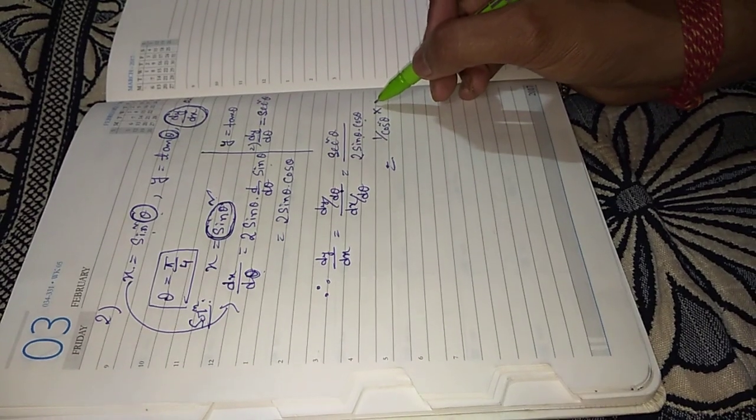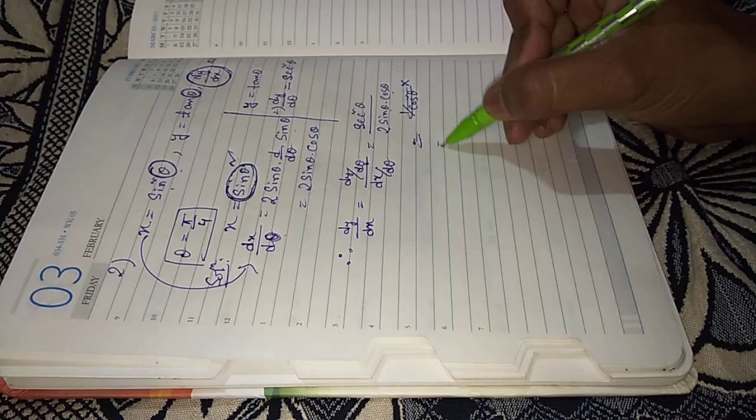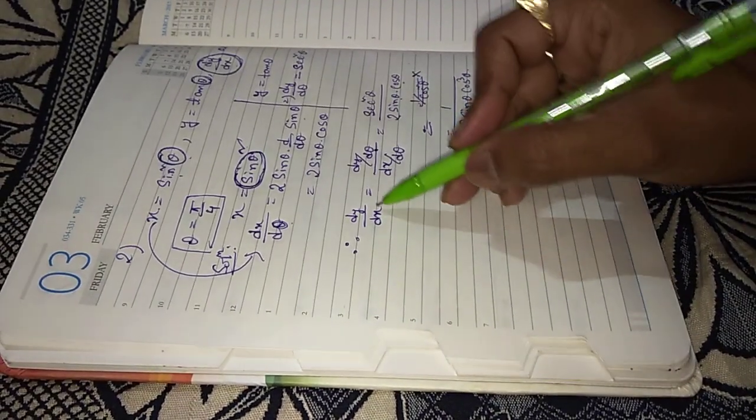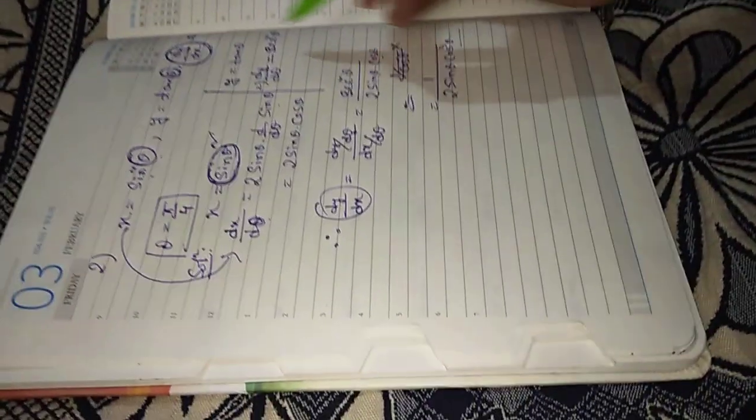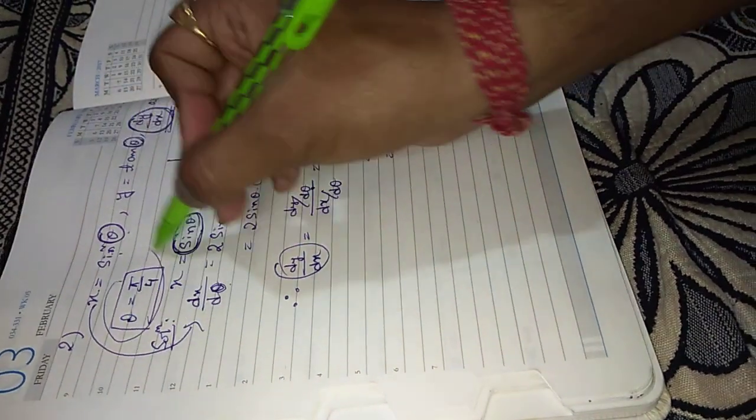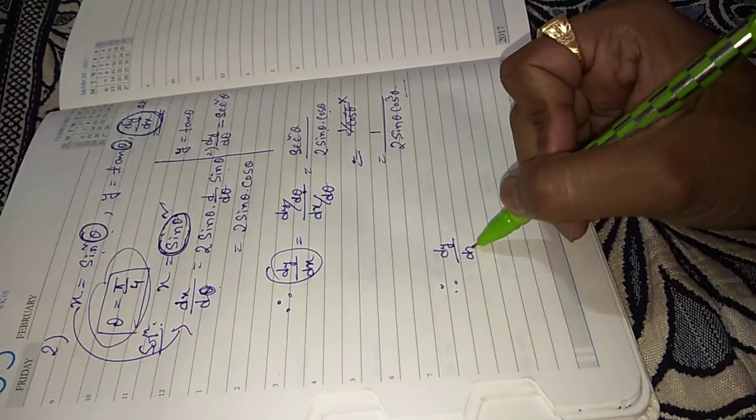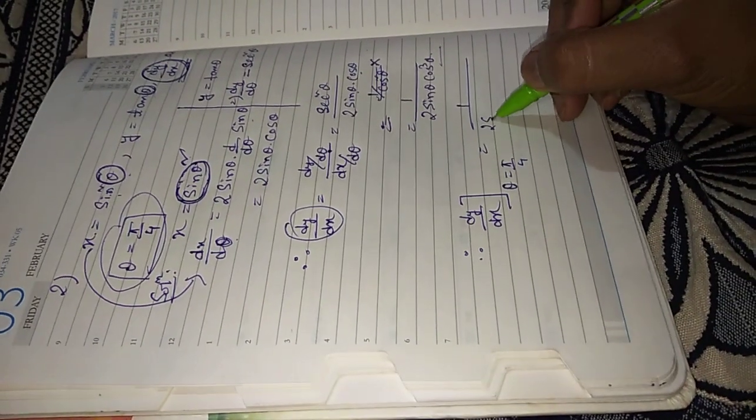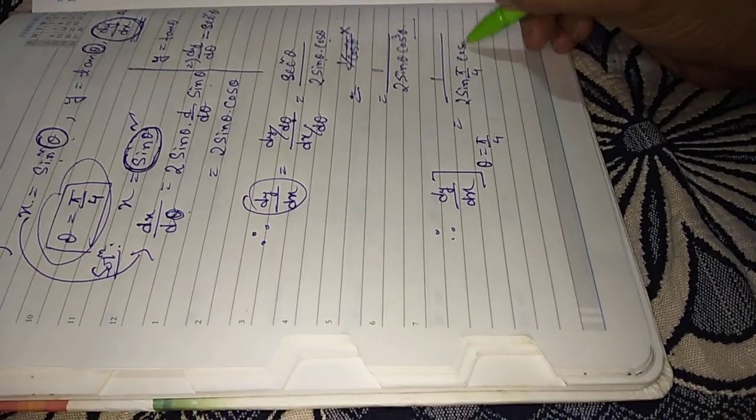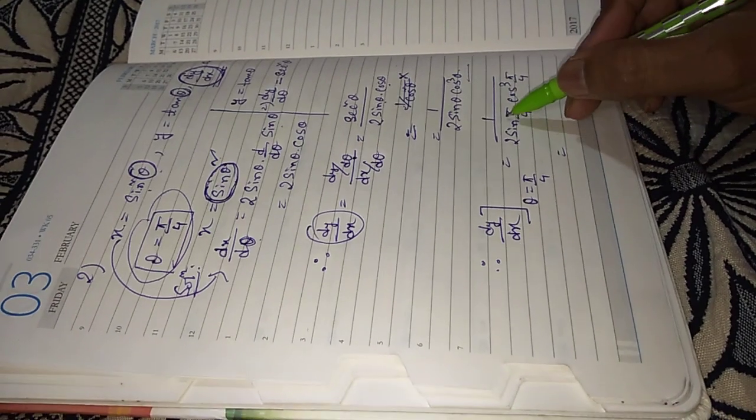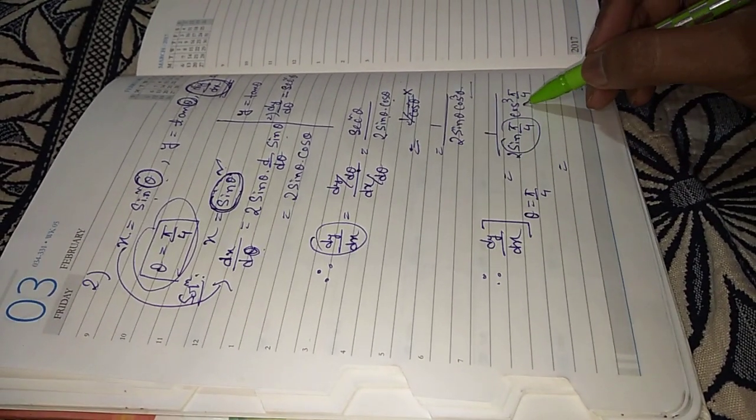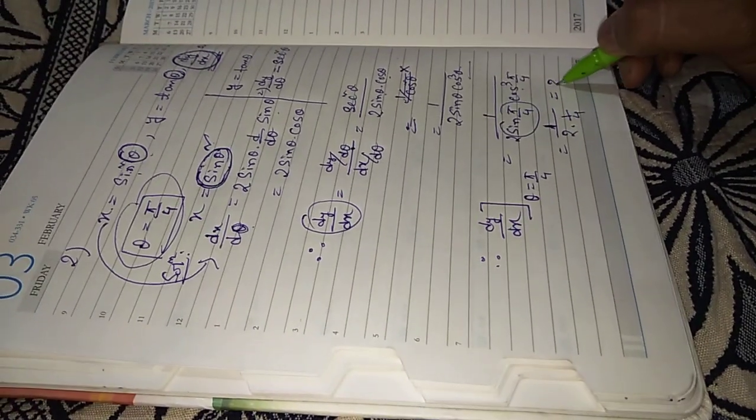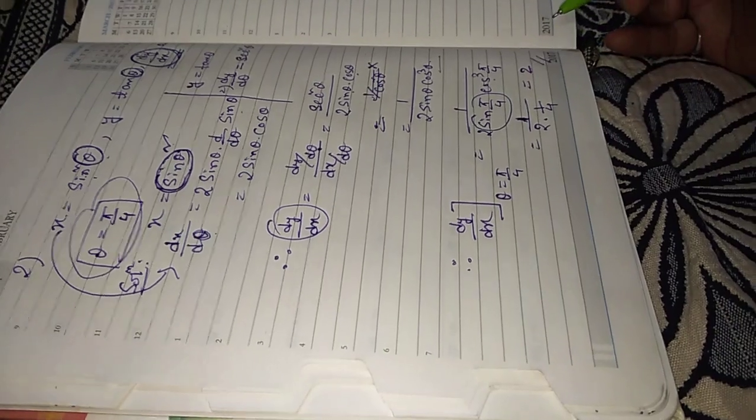This equals 1 by 2 sin theta cos cube theta. This is dy by dx, but the answer is not complete because you have to find dy by dx at theta equal to pi by 4. Now replace theta with pi by 4: 1 by 2 sin pi by 4 cos cube pi by 4. The value of sin pi by 4 is 1 by root 2, and cos pi by 4 is also 1 by root 2. Simplifying we get 1 by 2 times 1 by 4, that is 2, which is the required answer.